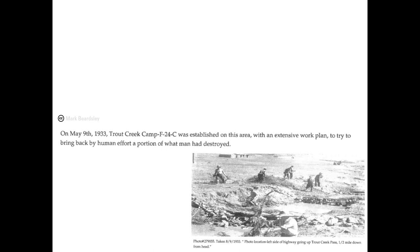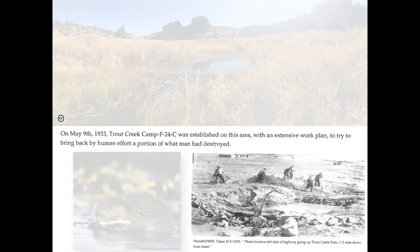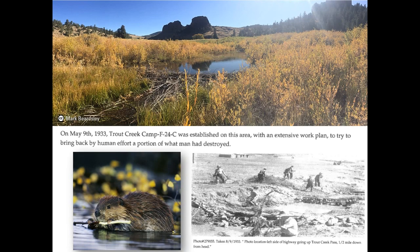In 1933, during the Great Depression, a whole mess of out-of-work dudes descended on Trout Creek with hand tools, willow stems, and whatever materials they could gather on site to try to — in their words — bring back by human effort a portion of what man had destroyed. Totally low tech. And hats off to you boys, it worked, and it's still working almost a century later. Why do you think it worked so well? I think it's because they had Mother Nature on their side. They enabled natural processes. They got plants and animals and wood and water to do most of the work in long-term maintenance.